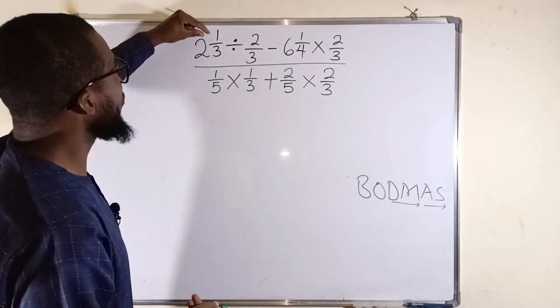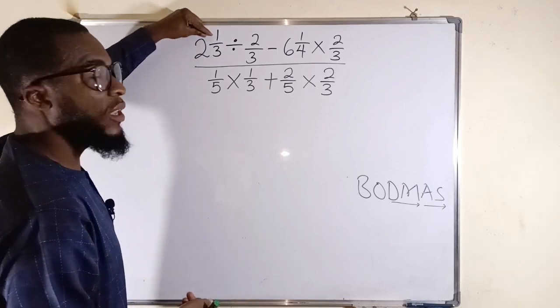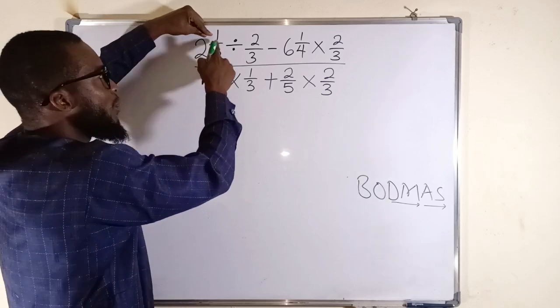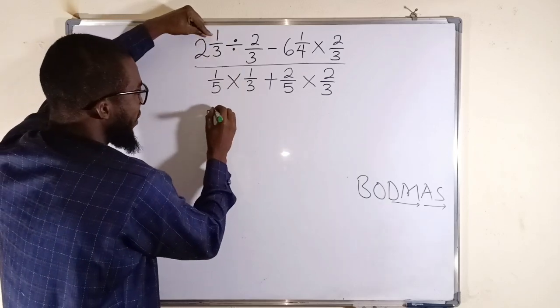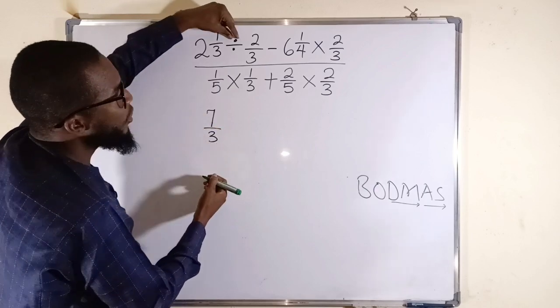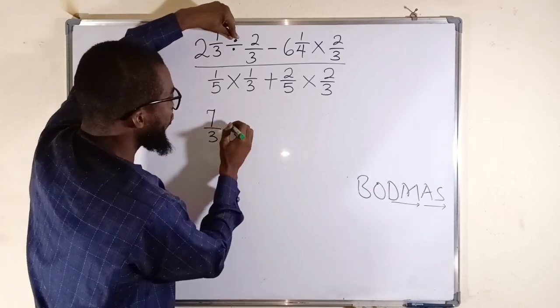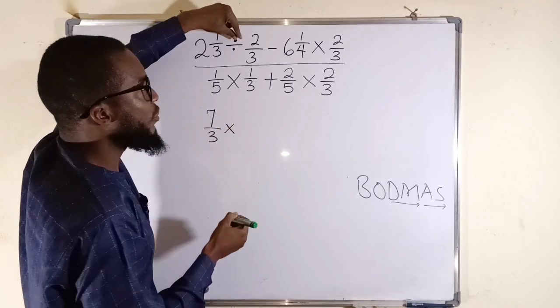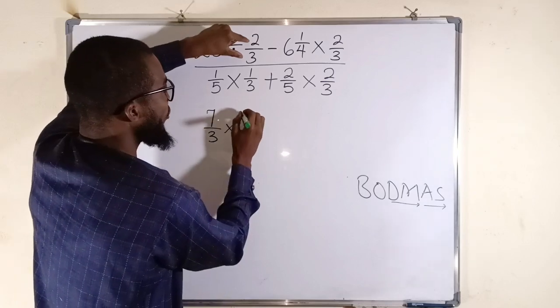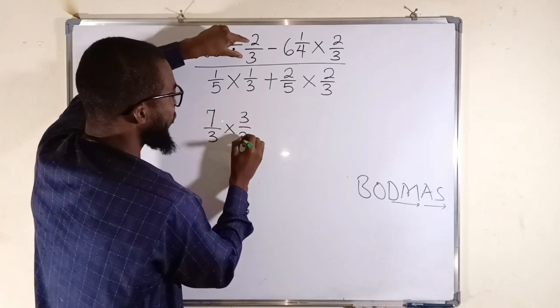So first of all, I would like to transform this into an improper fraction. 3 multiplied by 2 is 6 plus 1 is 7. So we have 7 here divided by that 3. And you can always change this division sign into multiplication. But you have to take the reciprocal of the next term. Instead of 2 divided by 3, we're going to write it as 3 divided by 2.